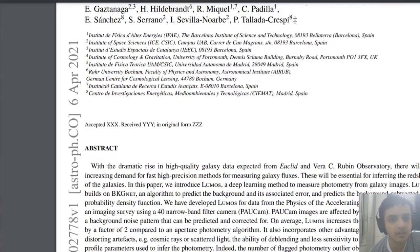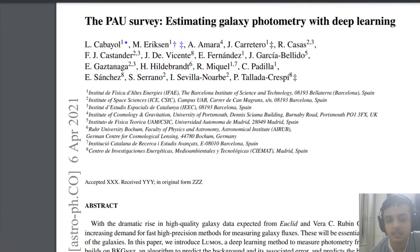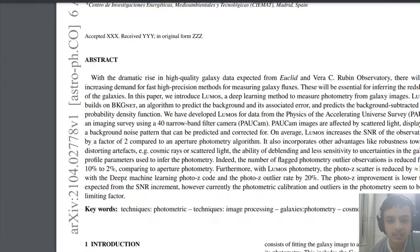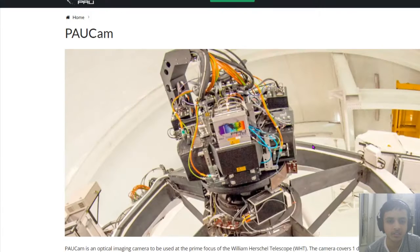Right now they are focusing on this data PAU which is Physics of Accelerating Universe survey. The survey is done using a 40 narrow band filter camera which looks something like this.